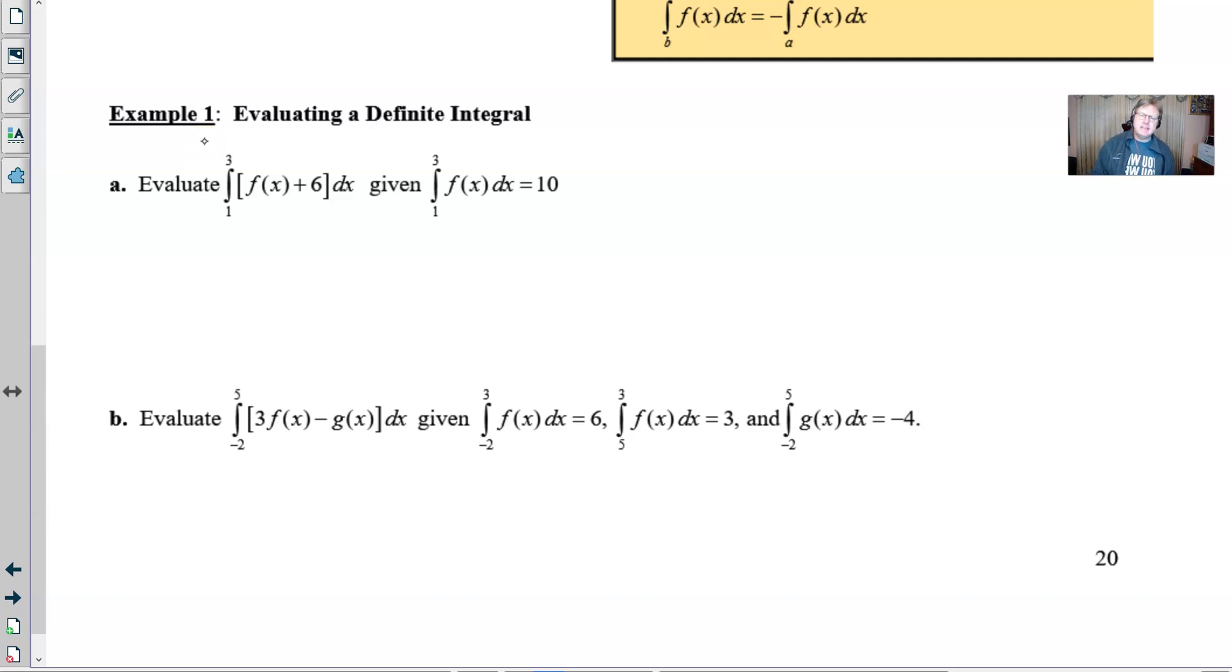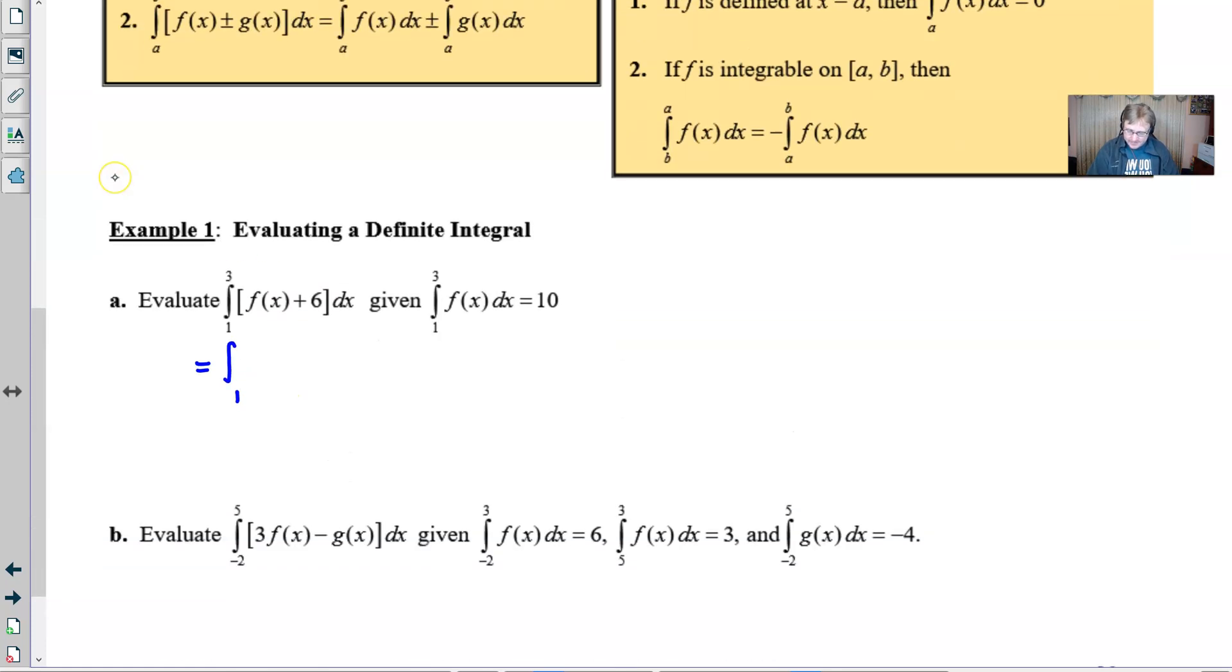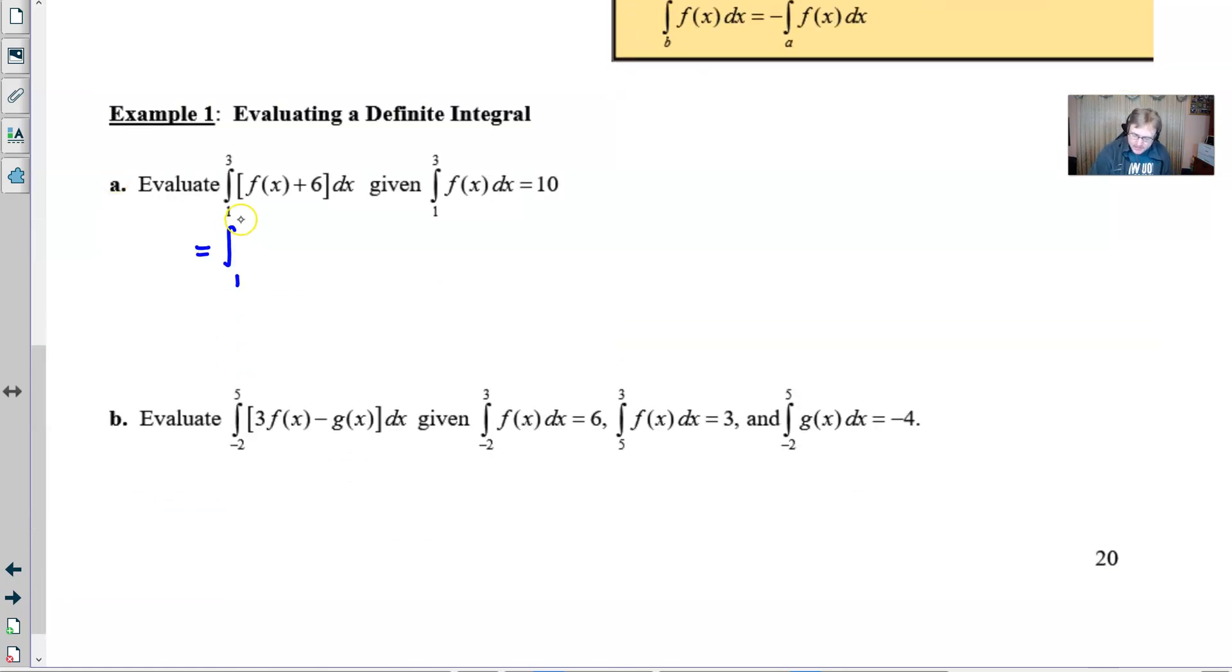So we don't need some fancy equation for f of x, we don't need a graph, we've got the information that we need. What we have to do with this is determine that we can split up this addition by using our second property from above, this guy right here, the additive property for integrals. So you'll integrate from one to three of f of x, and technically you should put the dx with him as well as you should put the dx with this integral that you're adding, which is the integration of six with respect to x. Because those dx's are going to stand for the width of that particular region.